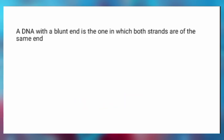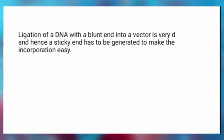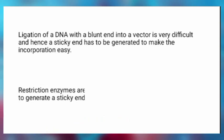But for a blunt end, both strands are of the same length. Incorporation of such a DNA into the vector's DNA is going to be difficult because both ends are blunt. Ligation of DNA with a blunt end into a vector is very difficult, and hence a sticky end has to be generated to make the incorporation much easier.